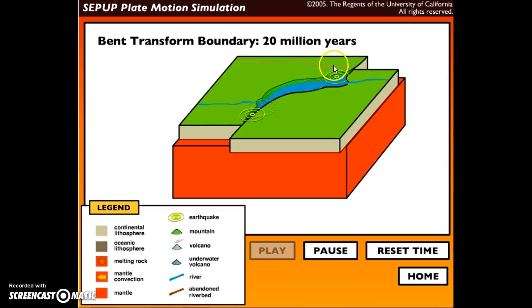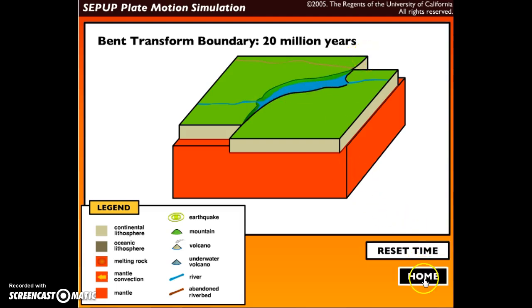So now it's an abandoned riverbed, and a new river was formed. Then also earthquakes occurred along that spreading plate boundary. If you missed any of the geologic features or events for the bent transform boundaries, be sure to rewind and rewatch.